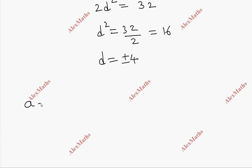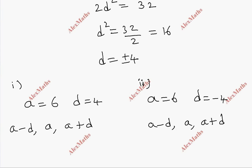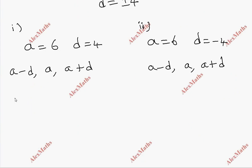With a = 6 and d = +4: the terms are (6 - 4), 6, (6 + 4) = 2, 6, 10. With d = -4: the terms are (6 + 4), 6, (6 - 4) = 10, 6, 2. So the three consecutive terms are 2, 6, 10.